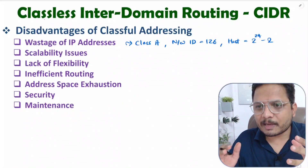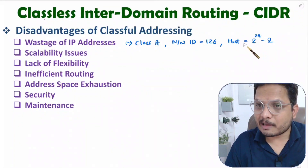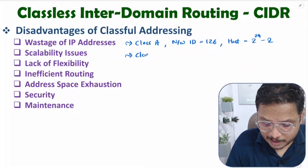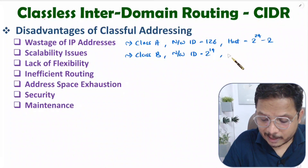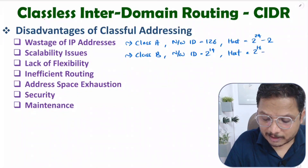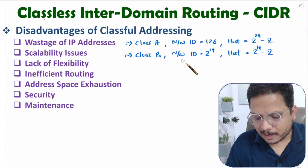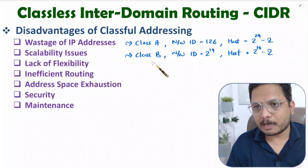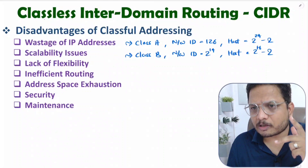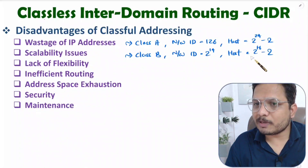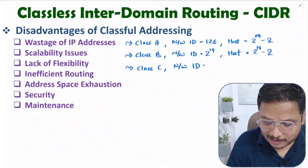Many times no company has that many hosts, yet that is what is available with Class A, so you will be wasting so many IP addresses. With Class B, there are 2 to the power 14 network IDs, and with each network ID, 2 to the power 16 minus 2 hosts are possible. So if somebody only needs 32 IPs, they waste too many IPs.